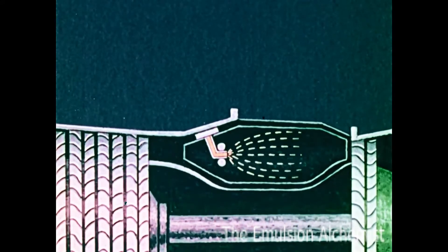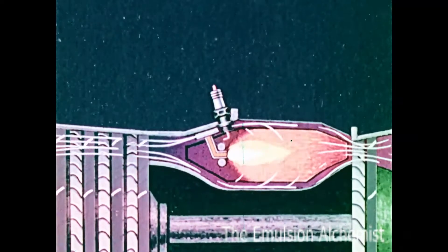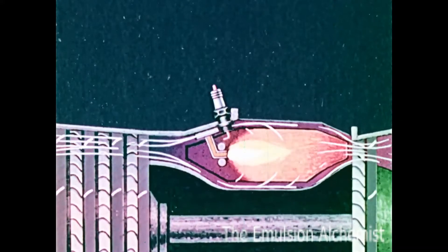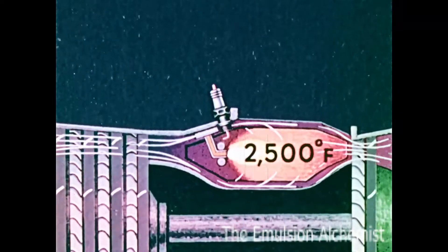A fuel nozzle sprays the fuel, usually a kerosene type, into the chamber. When the engine is first started, a spark plug fires, igniting the fuel, which then burns continuously, supplying gases to the turbine at a temperature as high as 2,500 degrees Fahrenheit.